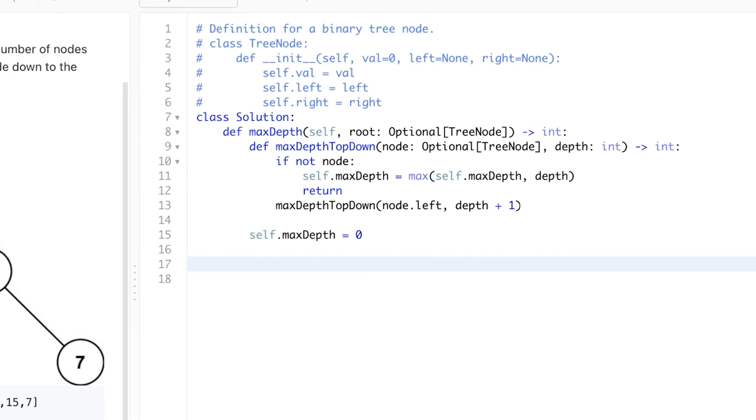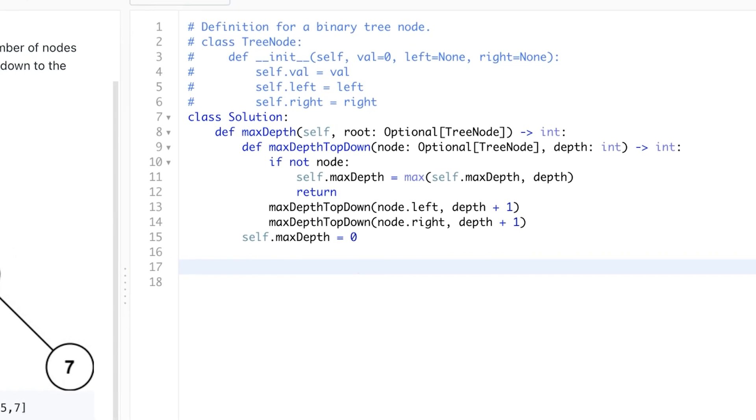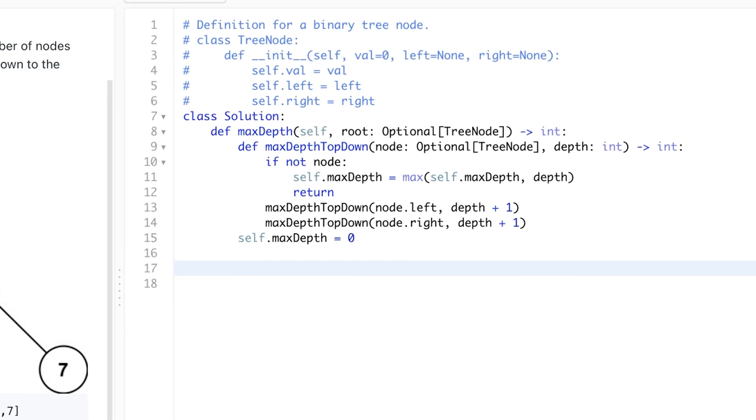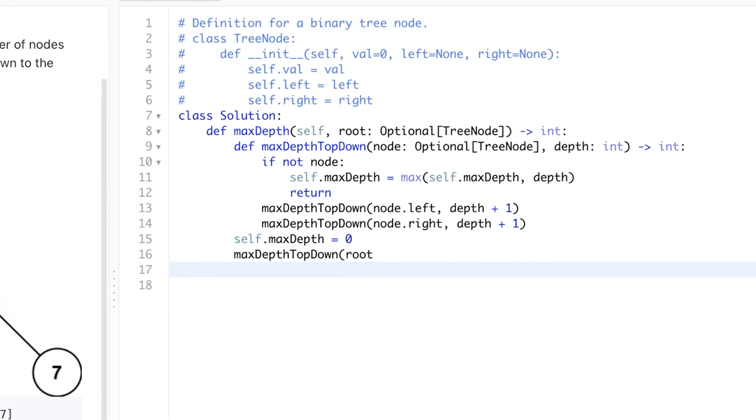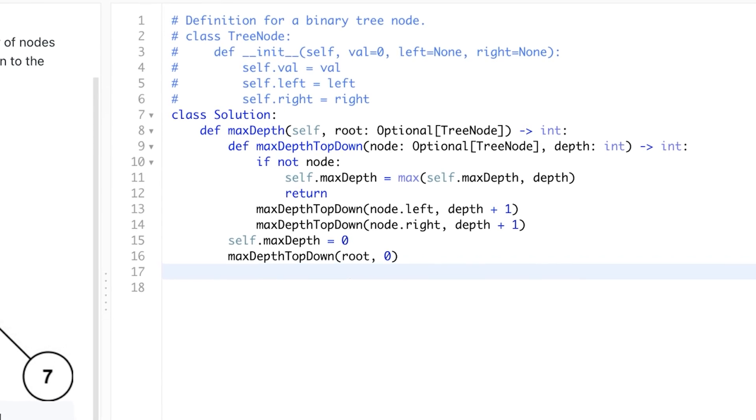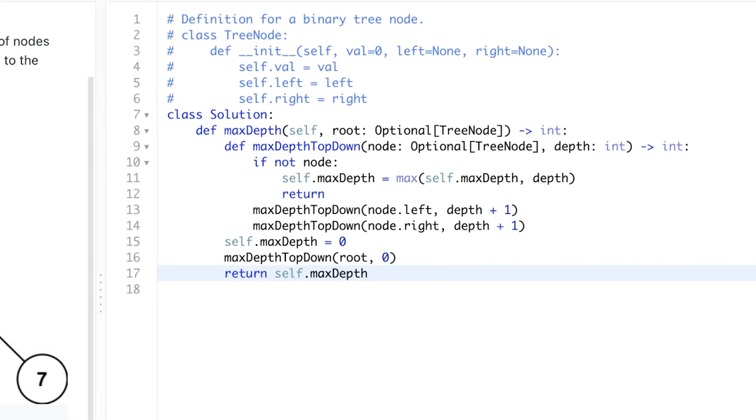If we have not reached the end, we increase the depth and traverse left and the right subtrees of the node. Now that we have our helper function in place, we just call this max depth top down function starting at the root node and initial depth of 0. And after this function does its thing, we return the max depth that we found.